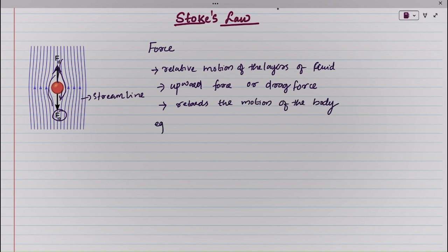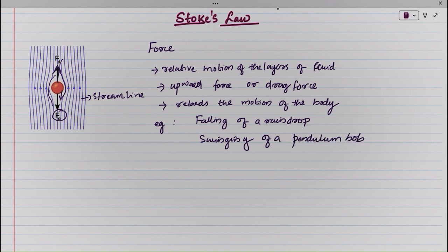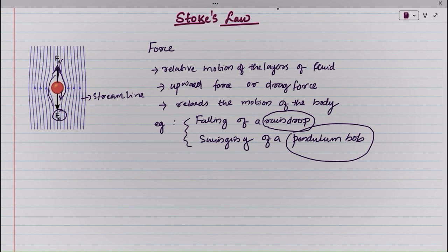For example, the falling of a raindrop or the swinging of a pendulum are examples of objects falling through a fluid. The raindrop experiences an upward retarding force, and the pendulum retards after some time.